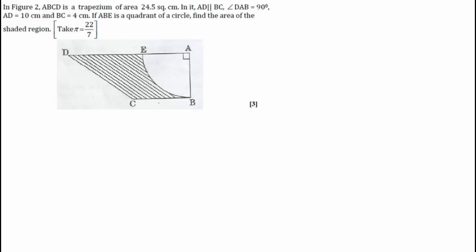Let's read this question. The question says in the given figure ABCD is a trapezium of area 24.5 centimeter square. AD is parallel to CB and angle DAB is 90 degrees. AD is 10 centimeters and BC is 4 centimeters.